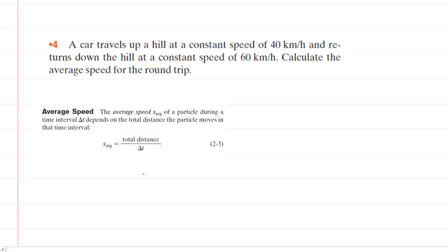To determine the average speed for the round trip, we need the total distance and the time, because average speed equals the total distance divided by the total time.